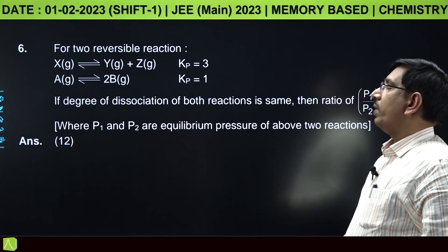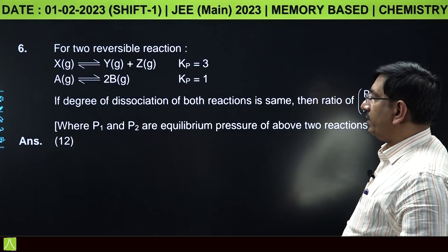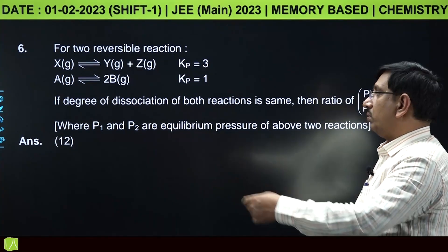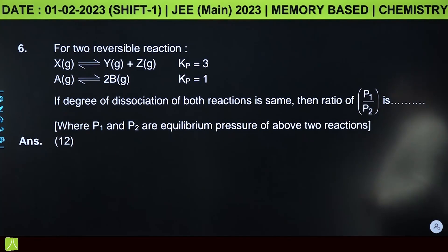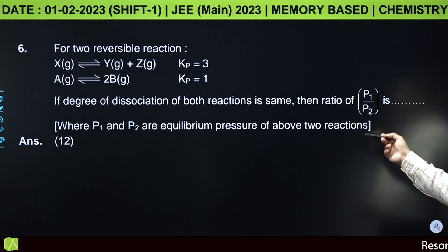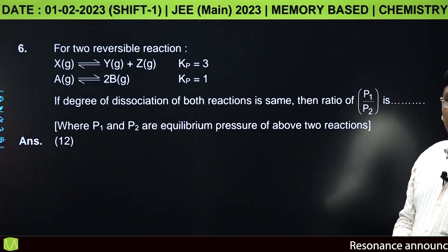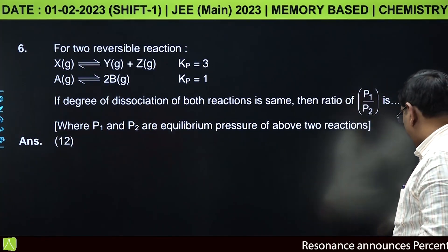For two reversible reactions: X gives Y+Z and A gives 2B. The Kp values are given. If degree of dissociation of both reactions is same, then ratio of P1 and P2. P1 and P2 are equilibrium pressures.